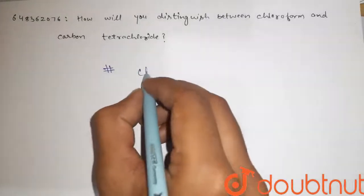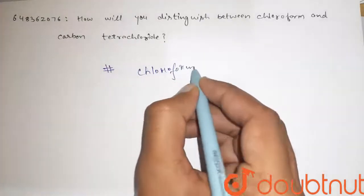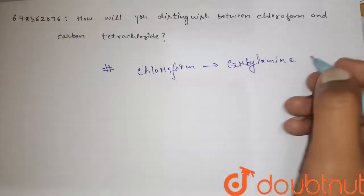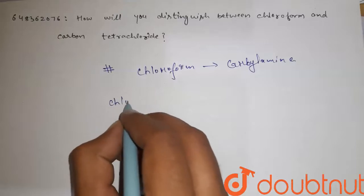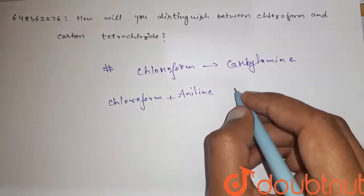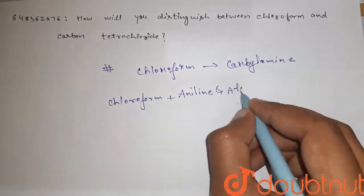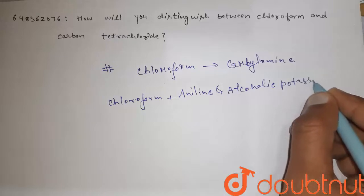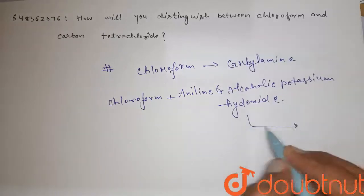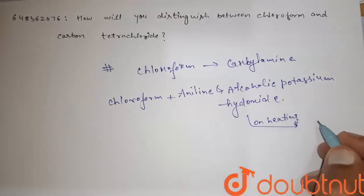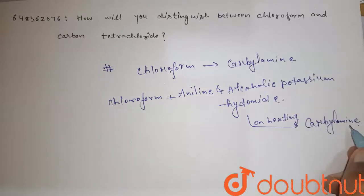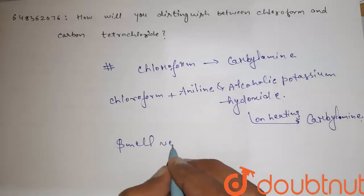Here we know chloroform gives carbylamine when heated with aniline and alcoholic potassium hydroxide. On heating, it gives carbylamine, whose smell is very offensive.